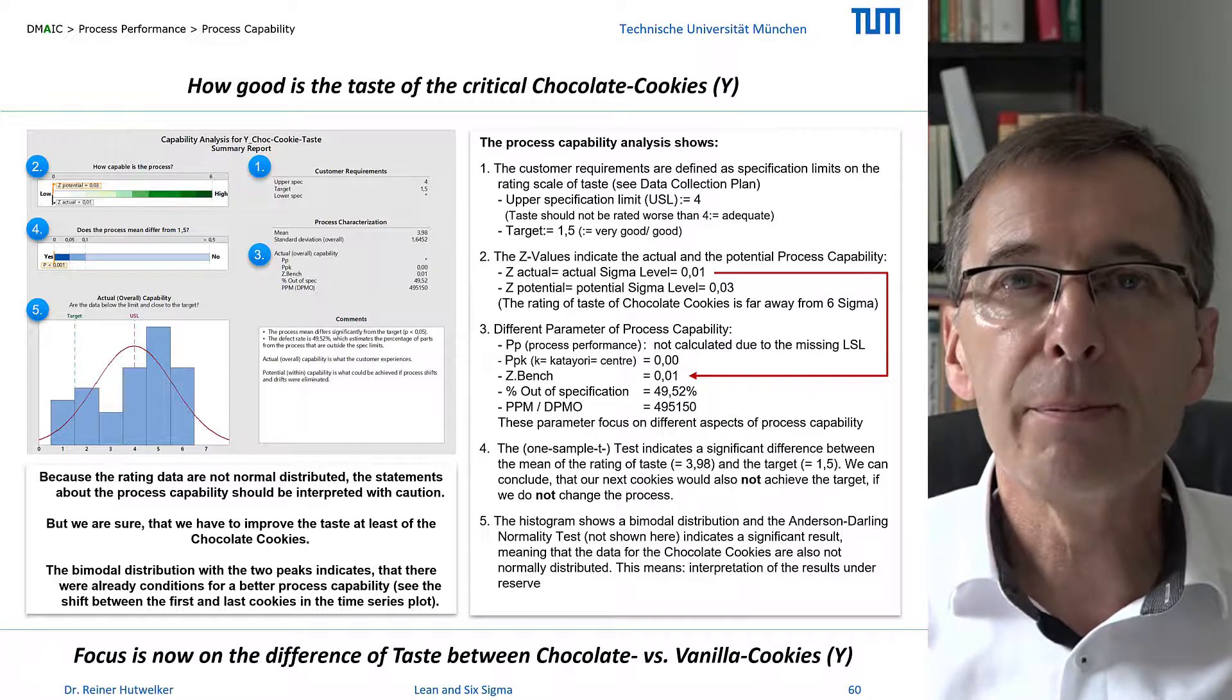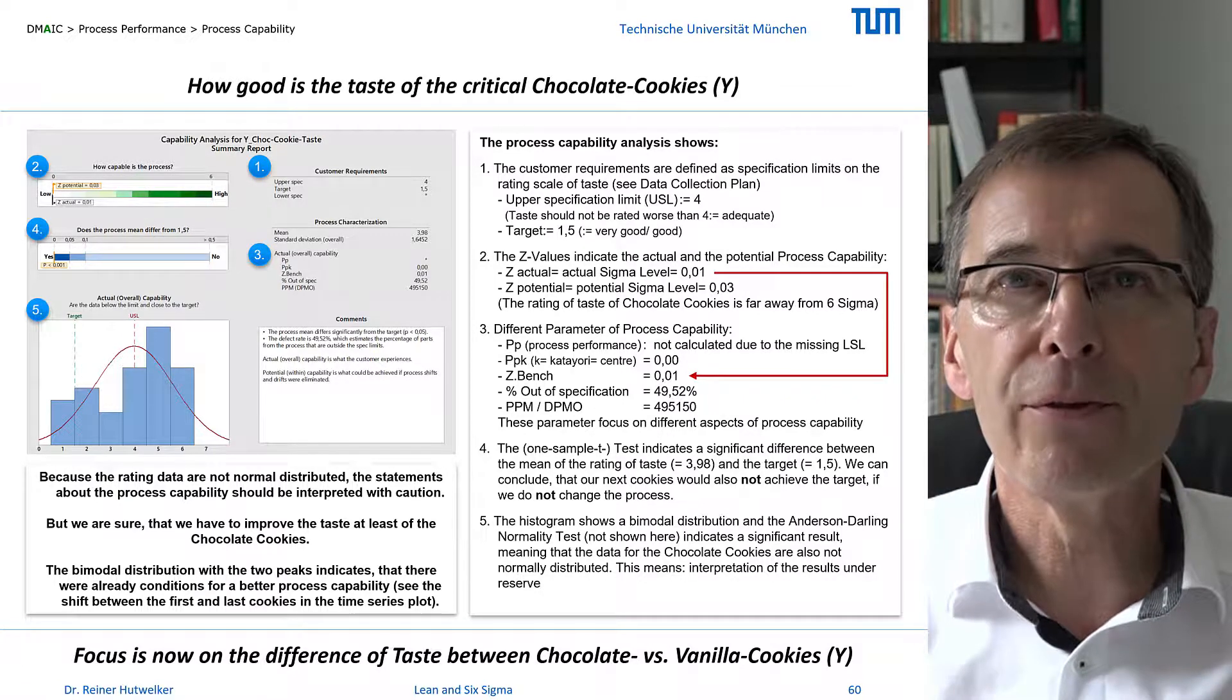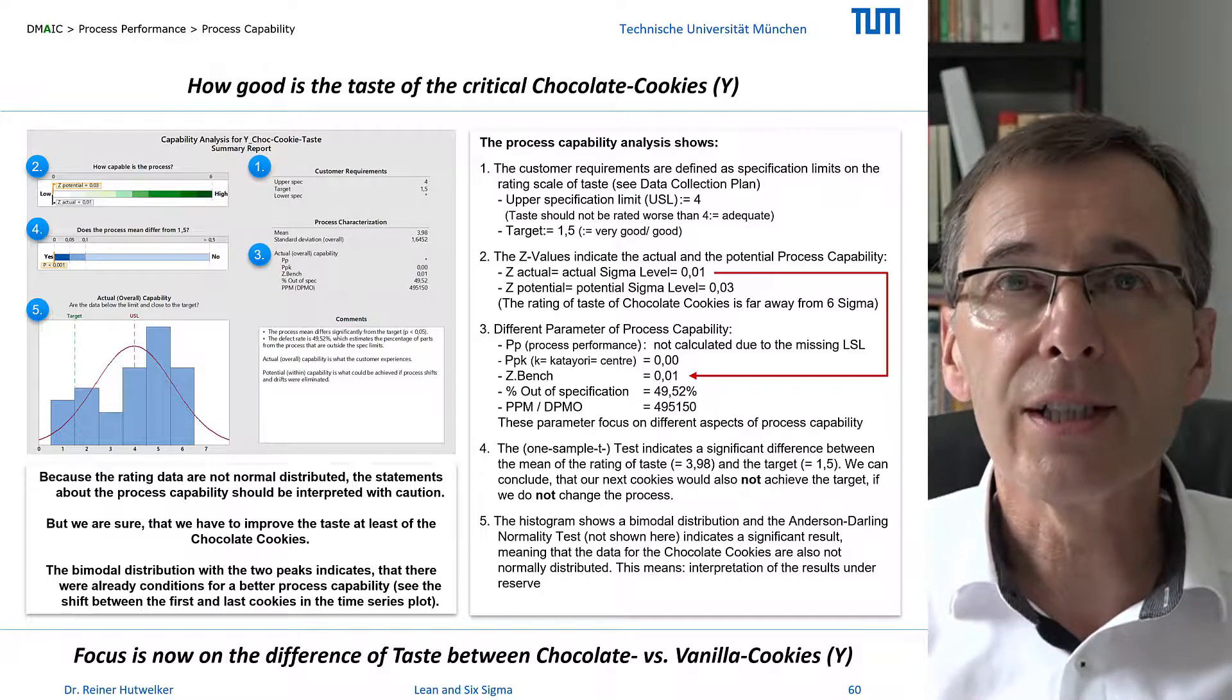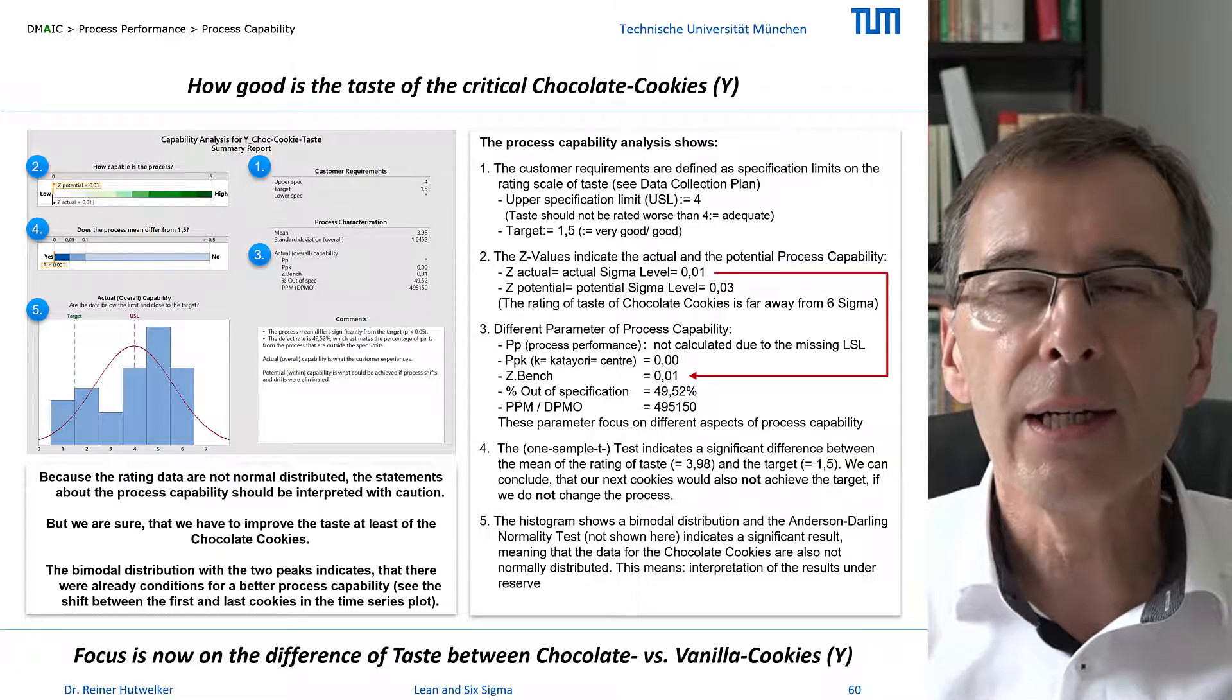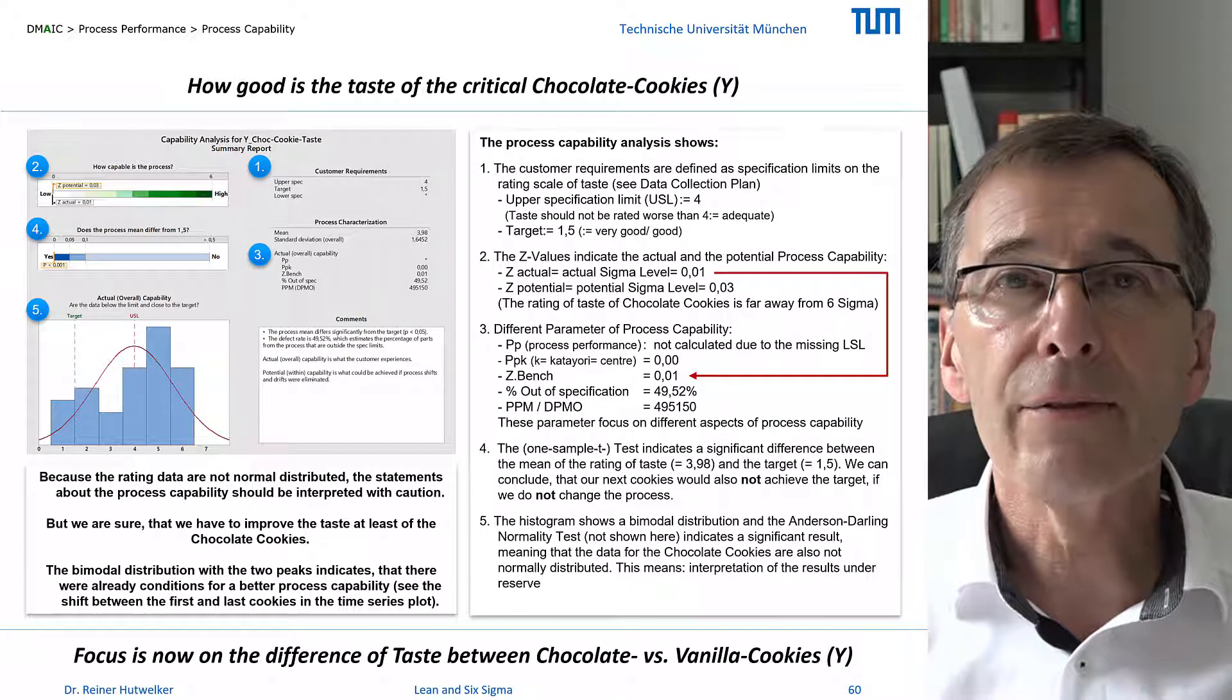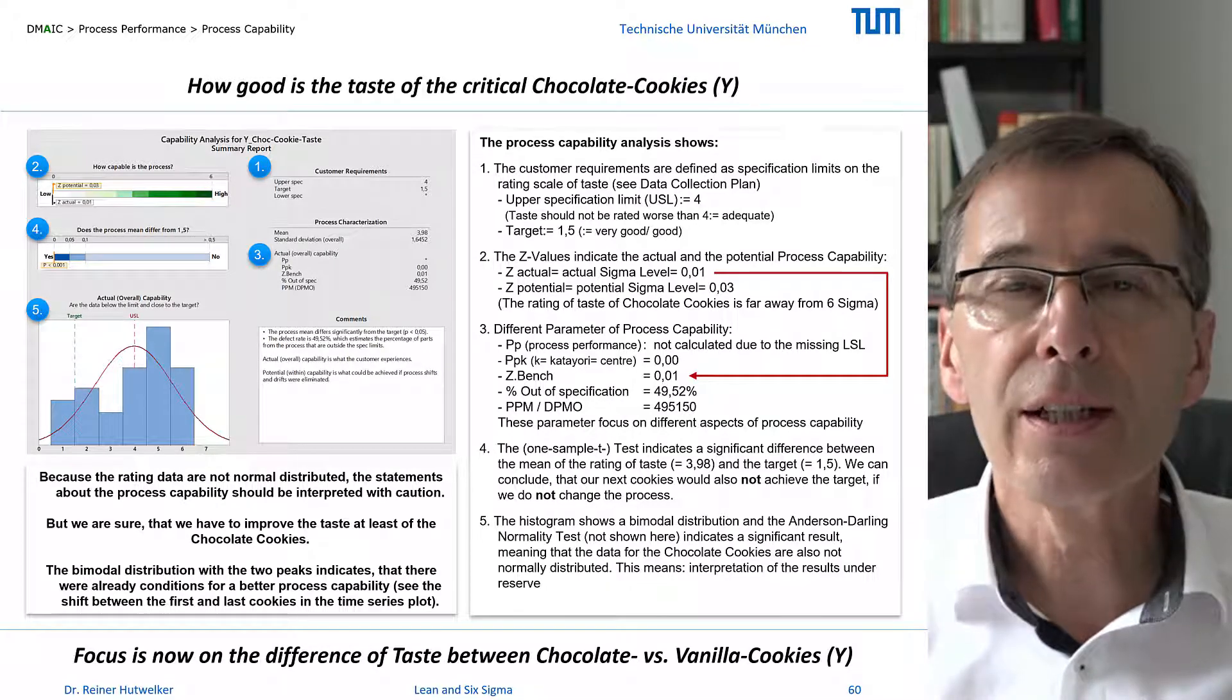Some Belts fear that managers might be upset about the documentation of their processes' poor performance. They are therefore considering presenting the results somewhat more positively than they are. But that would not only be dishonest, it also reduces the potential that you can prove in the control phase. The following hypothesis tests are aimed precisely at identifying the levers for this potential. The evaluation of the negative influences on the taste of our chocolate cookies.